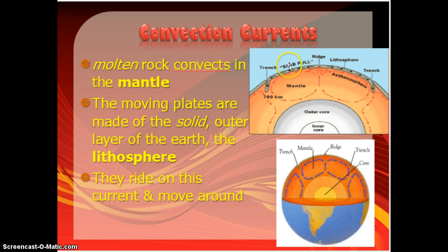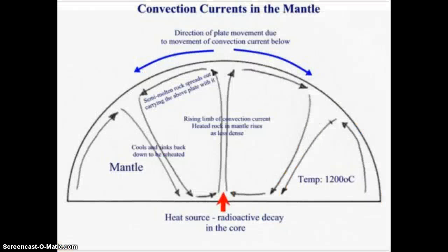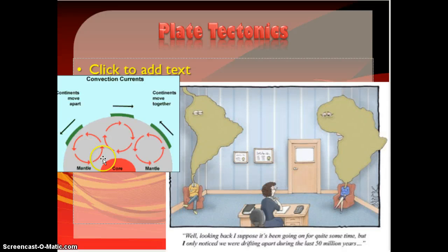When we see convection currents going in the asthenosphere, they start to push the lithosphere — that solid crust — around. Those pieces of rock in the lithosphere, what we call plates, ride on these currents, and that causes all of the movement we see in the plates. That's really the cause of continental drift. If two convection currents are going towards each other, that causes continents or plates to move towards each other. If they're pushing away from each other, that pushes the plates on top of them apart, making continents drift apart.